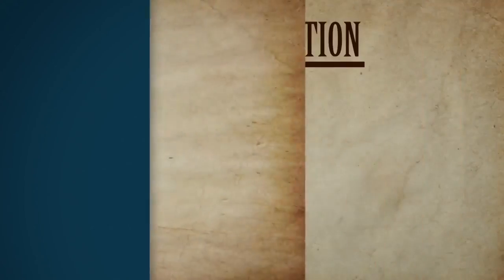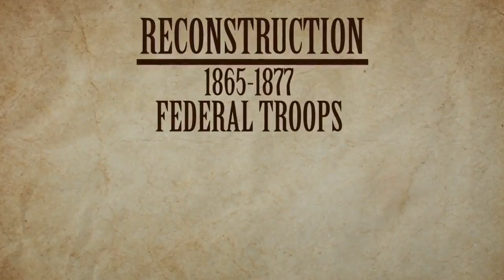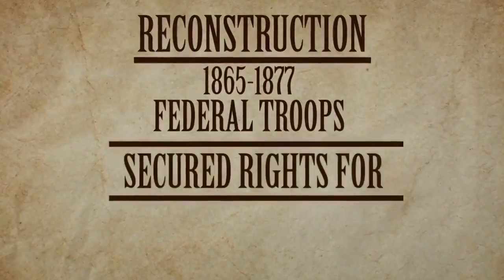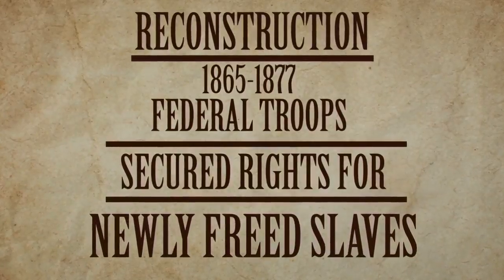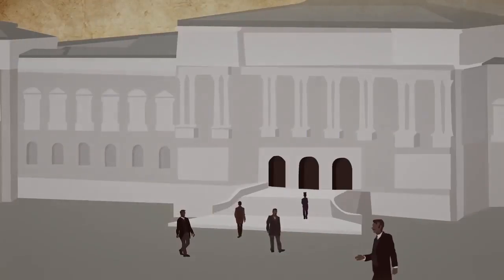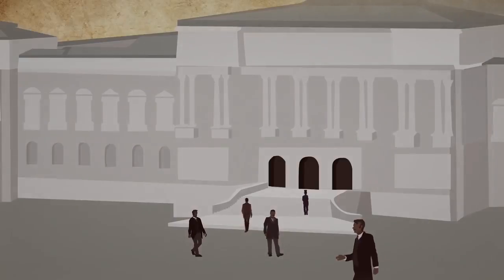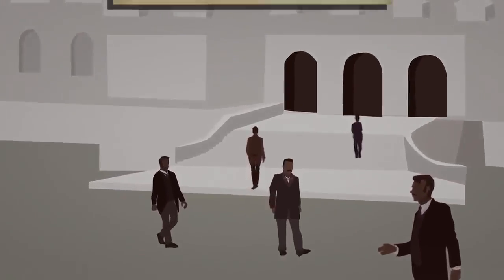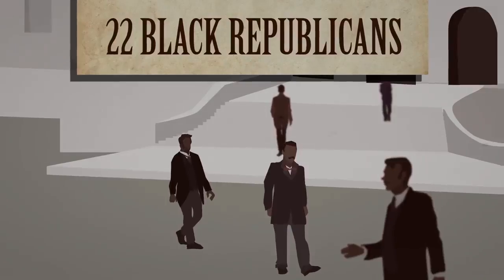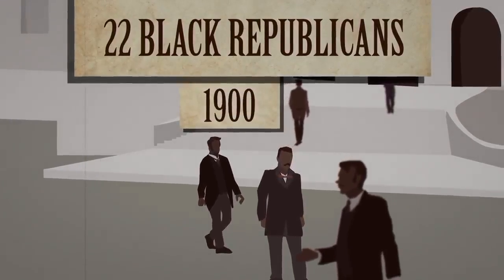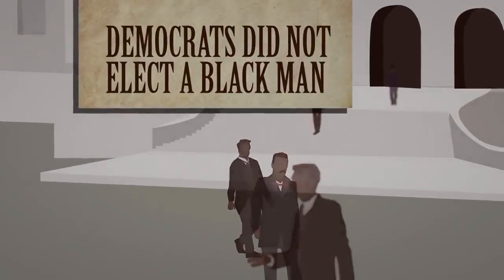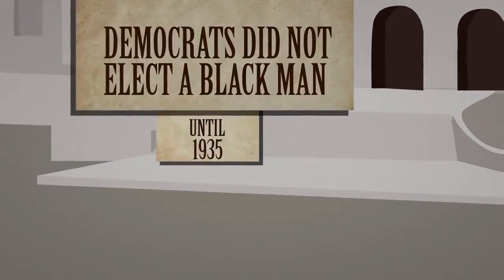During the era of Reconstruction, federal troops stationed in the South helped secure rights for the newly freed slaves. Hundreds of black men were elected to southern state legislatures as Republicans, and 22 black Republicans served in the U.S. Congress by 1900. The Democrats did not elect a black man to Congress until 1935. But after Reconstruction ended, when the federal troops went home, Democrats roared back into power in the South.